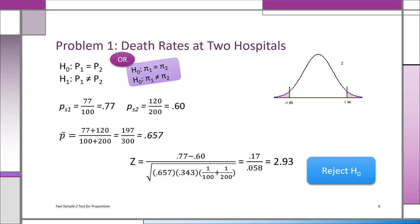Okay, now notice what we do. We look at the two proportions. pS1 is 77 out of 100 died, that's 0.77. pS2 is 120 out of 200, that's 0.60. So really we're comparing 77 percent with 60 percent.